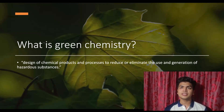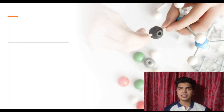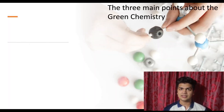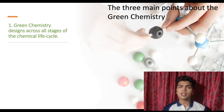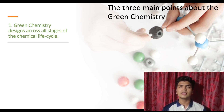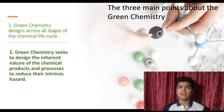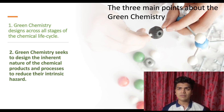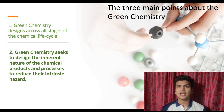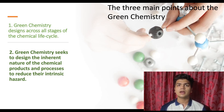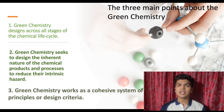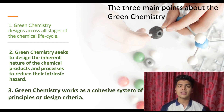The three main points about the green chemistry framework can be summarized as: first, green chemistry designs across all stages of chemical life cycle; second, green chemistry seeks to design the inherent nature of chemical products and processes to reduce their intrinsic hazard; third, green chemistry works as a cohesive system of principles or design criteria.